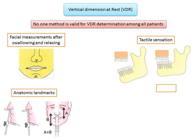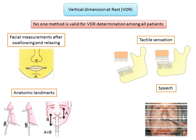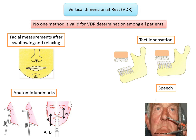Another method for recording VDR uses speech. The patient is asked to repeatedly pronounce the letter 'M' a certain number of times, and the distance between the two reference points — the same nose and chin reference points — is measured immediately after the patient stops.